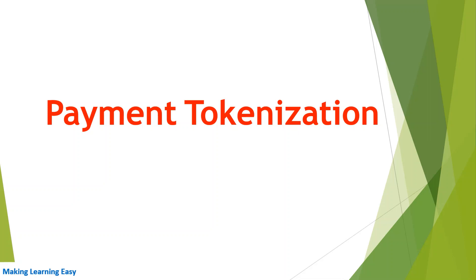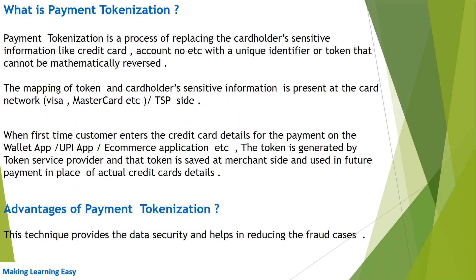Welcome to the session. In this session we are going to discuss about payment tokenization, which is one of the important concepts in payment processing. It helps us to reduce fraud cases. Payment tokenization is a process of replacing the cardholder's sensitive information like credit card number, account number, etc. with a unique identifier — or we can call it a token — that cannot be mathematically reversed. The token itself does not have any significant information; even if it is stolen by an unauthorized person, that person will not be able to extract any information from it because it is a random number.